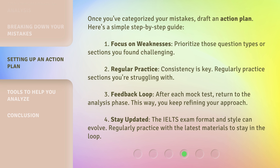Once you've categorized your mistakes, draft an action plan. Here's a simple step-by-step guide. 1. Focus on weaknesses: Prioritize those question types or sections you found challenging. 2. Regular practice: Consistency is key. Regularly practice the sections you're struggling with.